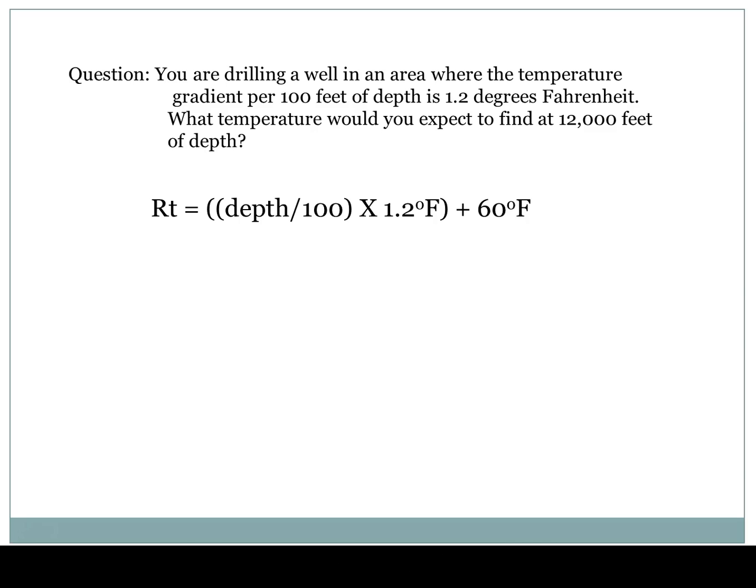And then we multiply that by 1.2 degrees Fahrenheit. Now what some people tend to leave off of the equation can cost you a lot of points. Don't forget, if we stick a thermometer in the ground, it's not going to read zero. In the U.S. oil industry, we use 60 degrees Fahrenheit as a standard. So unless you're told otherwise, 60 degrees is what you'll use. We can't forget there is an ambient temperature.